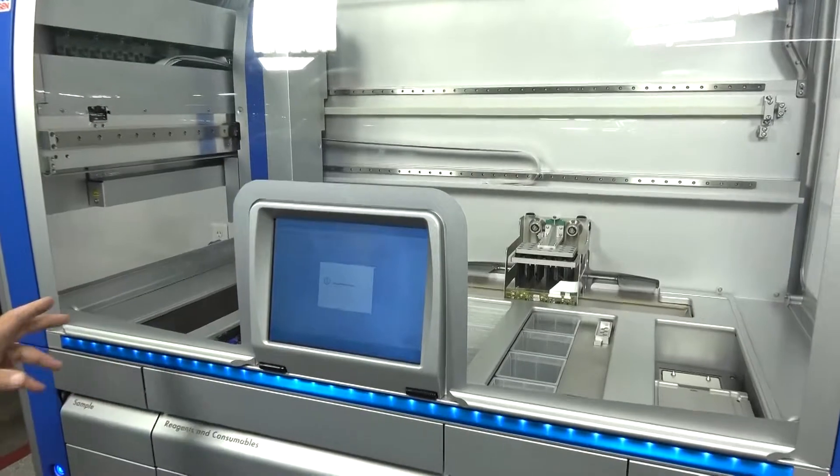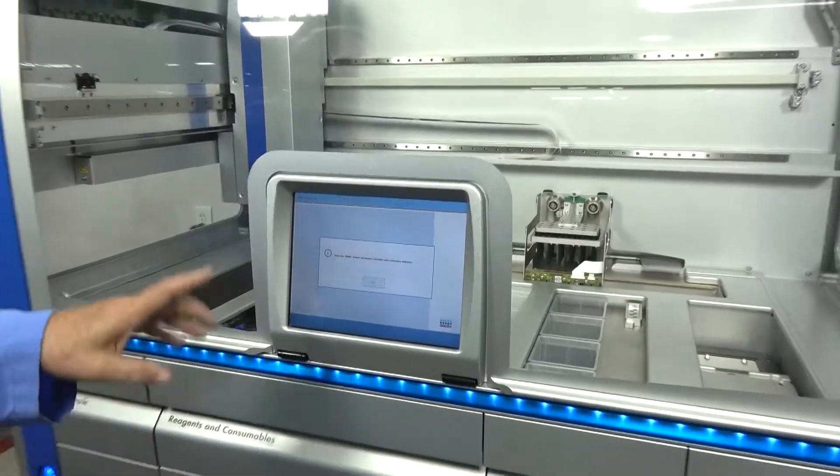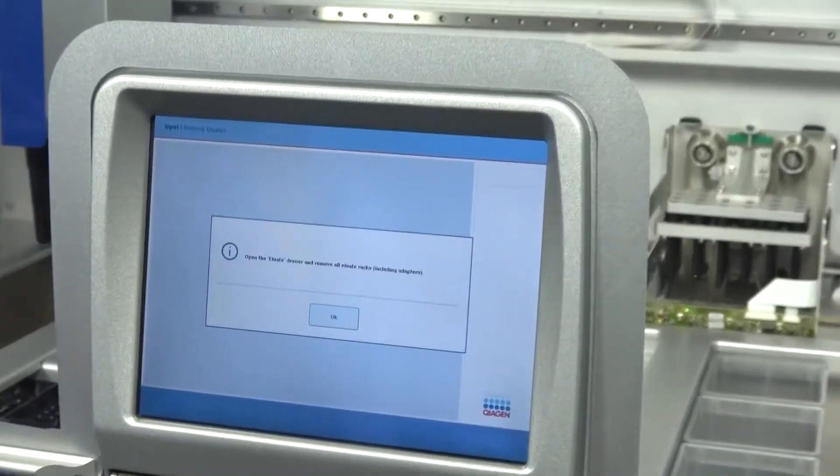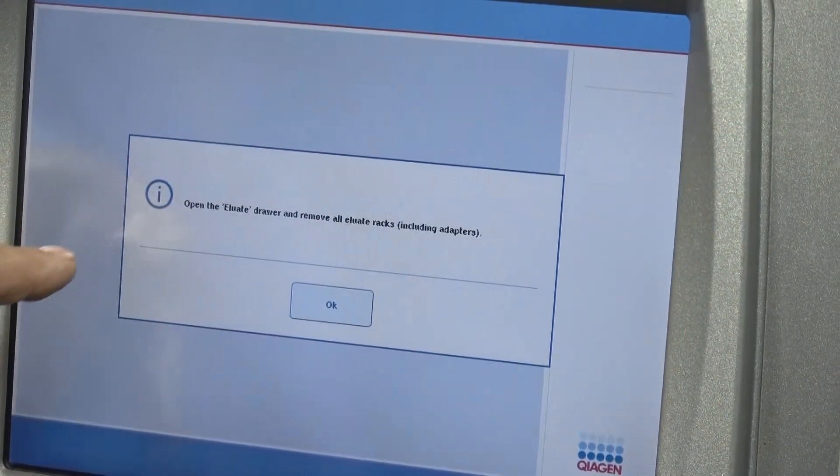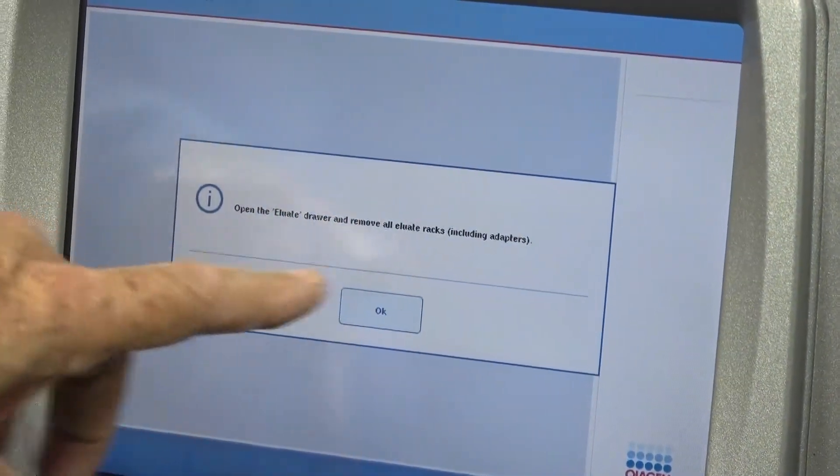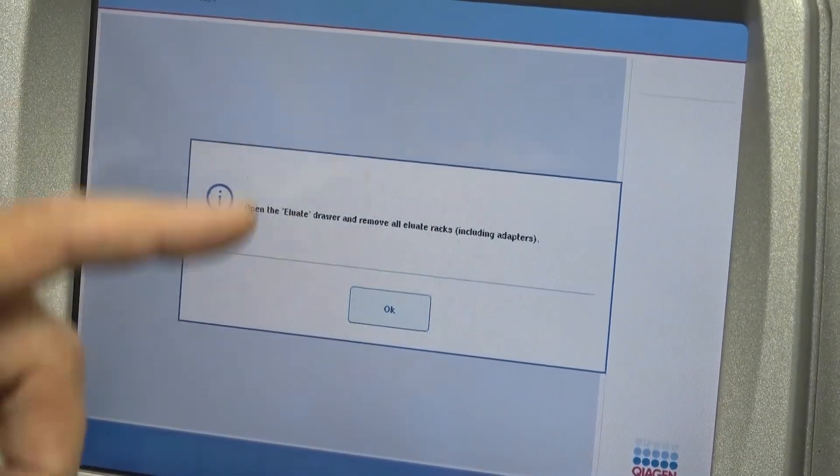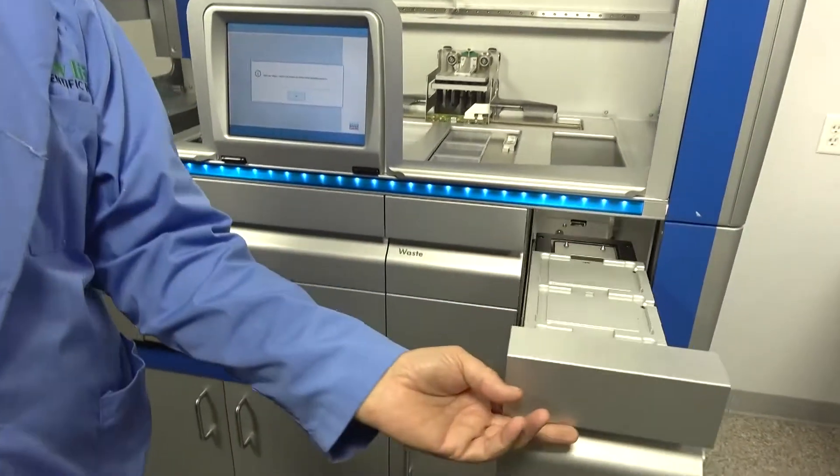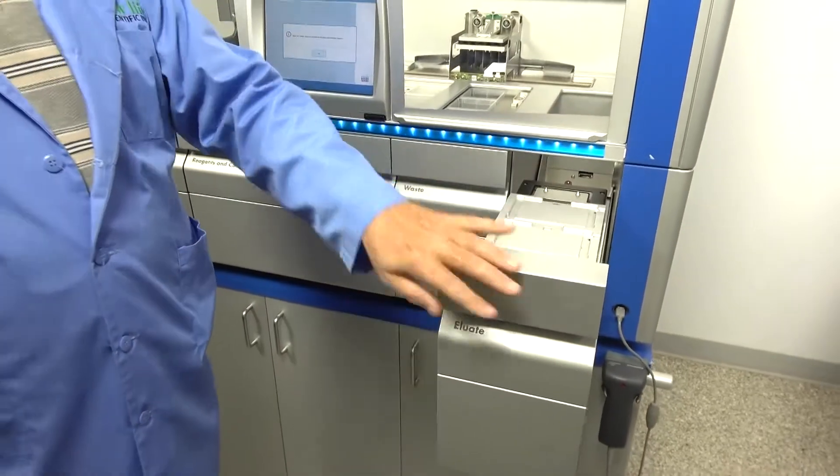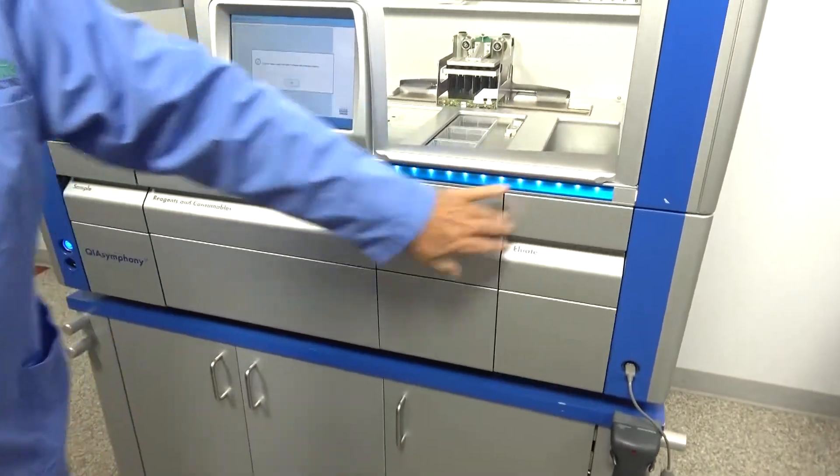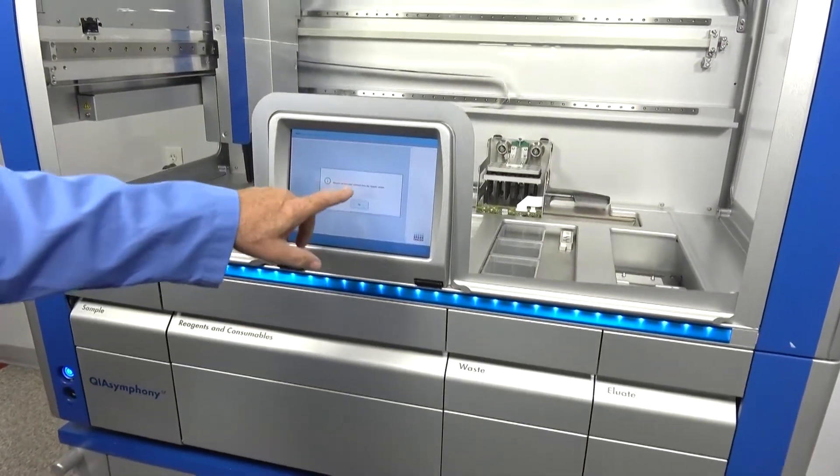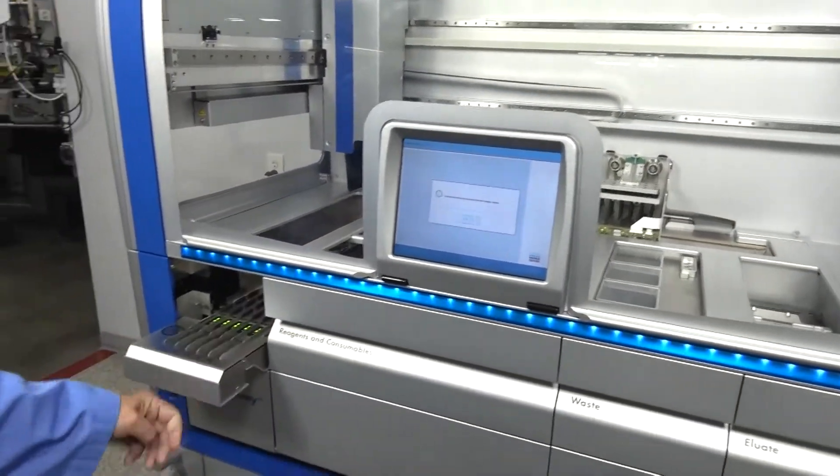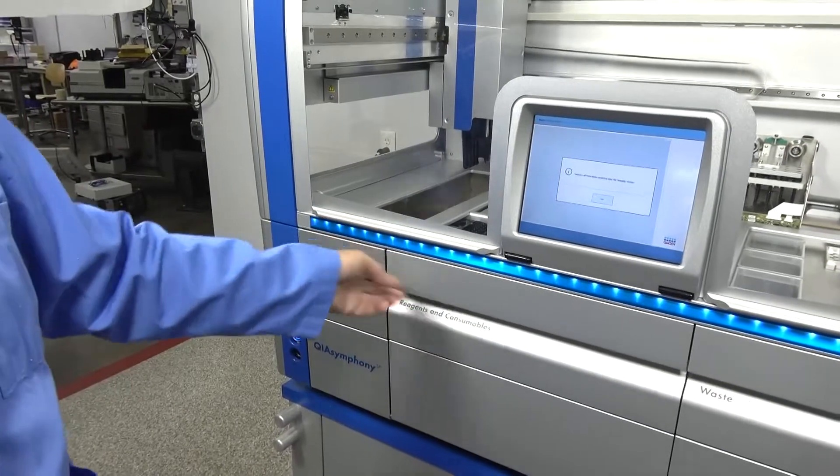Again, touchscreen makes it easy to use. It makes sure everything is locked. I can't pull things open right now. Actually, I can because it's telling me to. It says open the drawer, remove any aliquots that I would have in there. And as I said, it walks you right through. Remove any tube carriers.